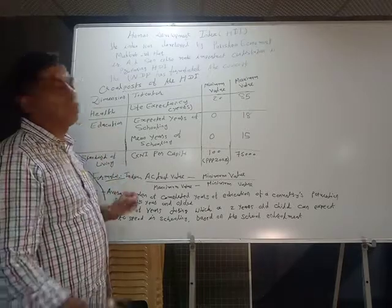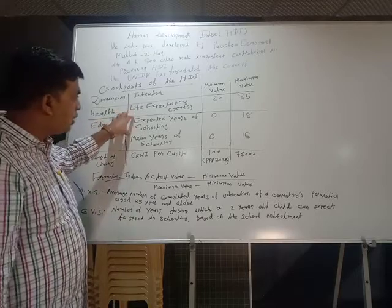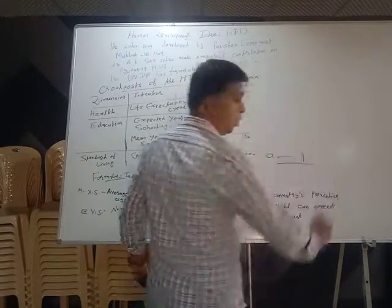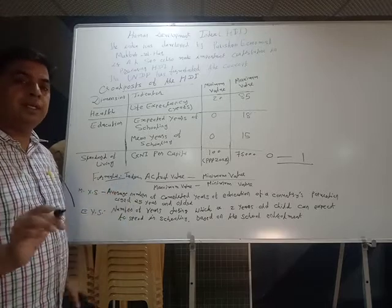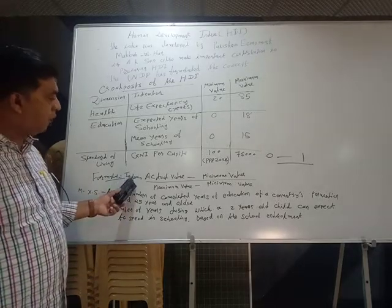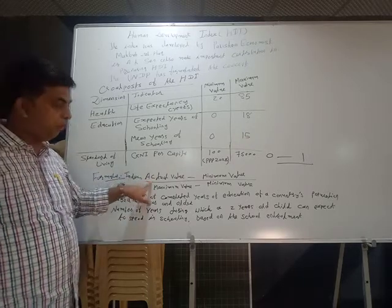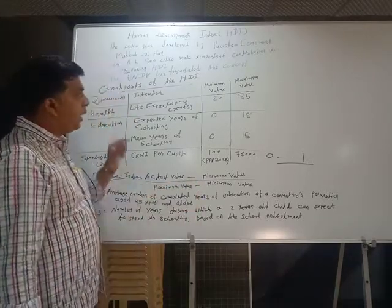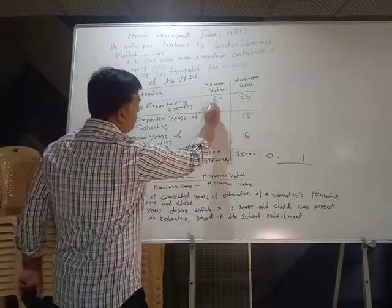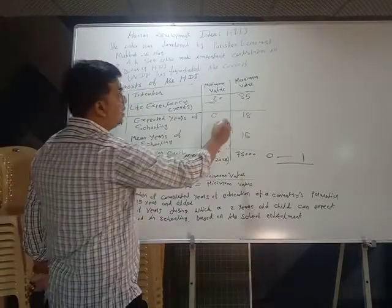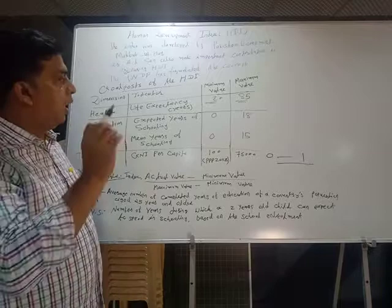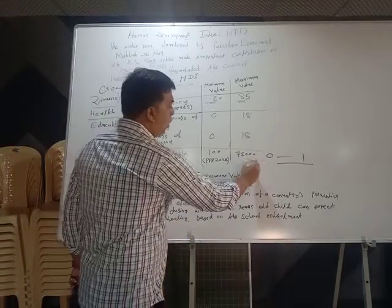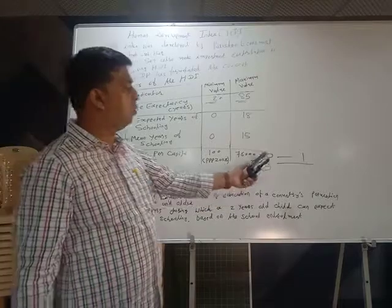Here a very important point should be noted: HDI is calculated on the basis of a 0 to 1 scale. Individual indices can be computed on the basis of a common formula: actual value minus minimum value, divided by maximum value minus minimum value. For life expectancy, the minimum value is 20 years and maximum value is 85 years. It means if a country has a life expectancy of only 20 years or less, then in the Human Development Index its score will be 0.